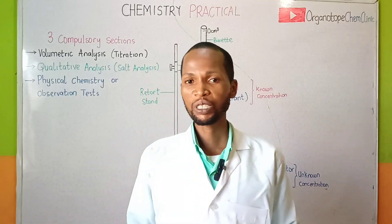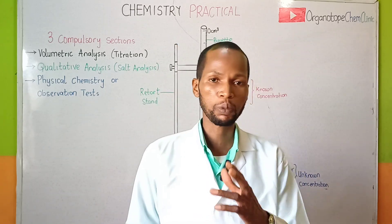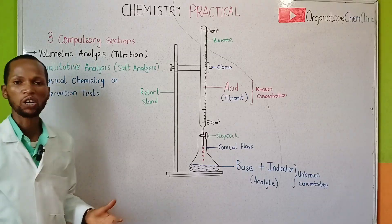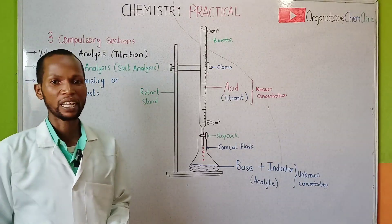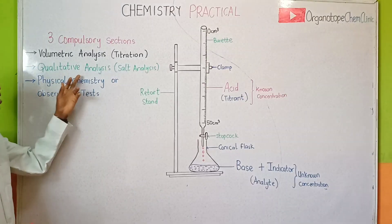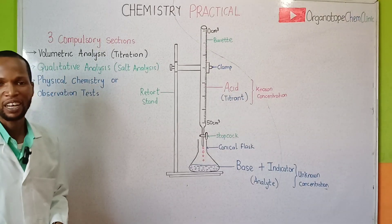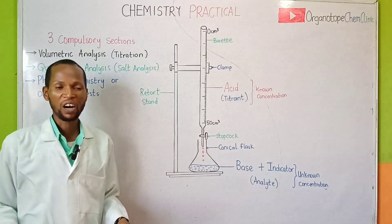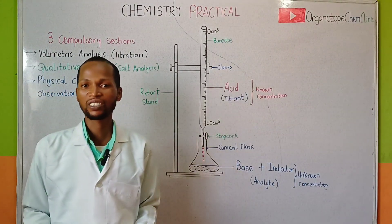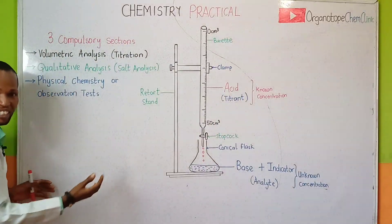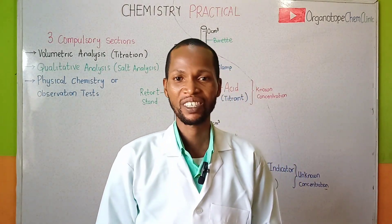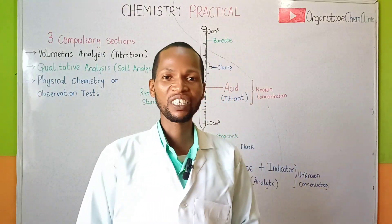In the chemistry practical exam, the three compulsory sections you must prepare for include: volumetric analysis, also known as titrometric analysis or titration; qualitative analysis, also known as salt analysis; and physical chemistry or observation test, whereby you conduct the gas test. Each of these sections attracts serious marks and small mistakes can cost you big.